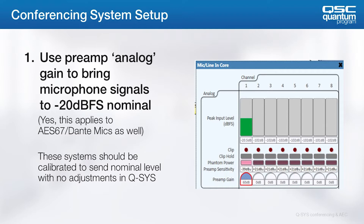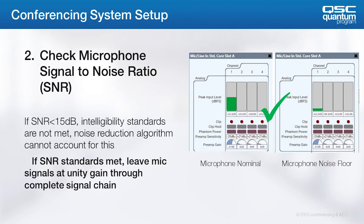Remember that all system inputs should be calibrated to the same negative 20 dBFS nominal. This includes program feeds and signals from the far end. Now that the conferencing mics have proper gain structure, we'll next want to check the signal-to-noise ratio of each microphone. It's fairly easy — we'll simply want to be quiet for a few moments and let the mic sense only the noise floor of the room.